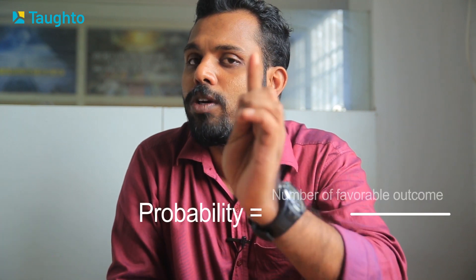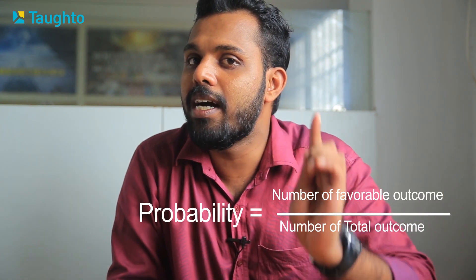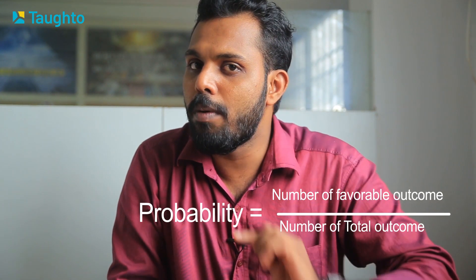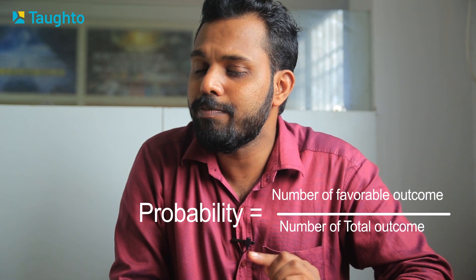We have a coin toss. The probability of getting a head is one by two — that is, favorable outcome divided by total outcome. This is Probability.